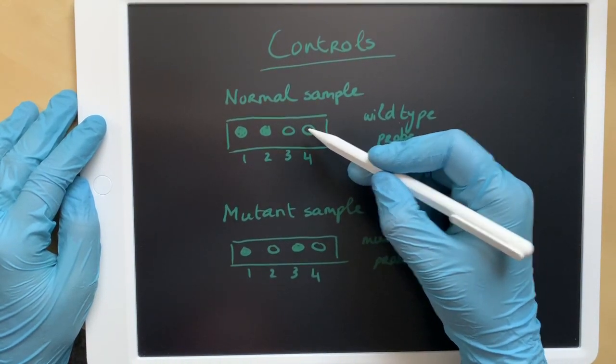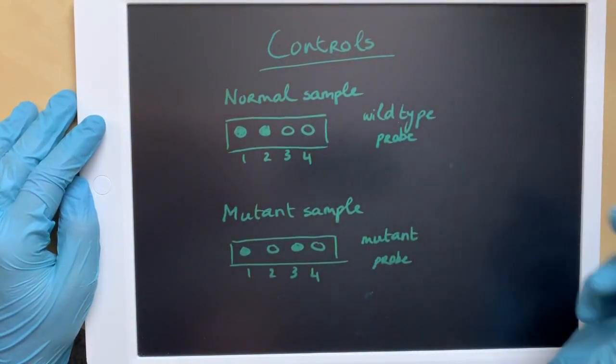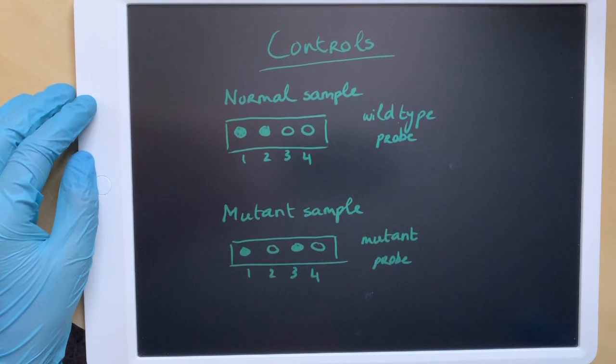The last control is the negative control, to which both probes are added and contains no sample DNA. This control is used to check for any contaminants.